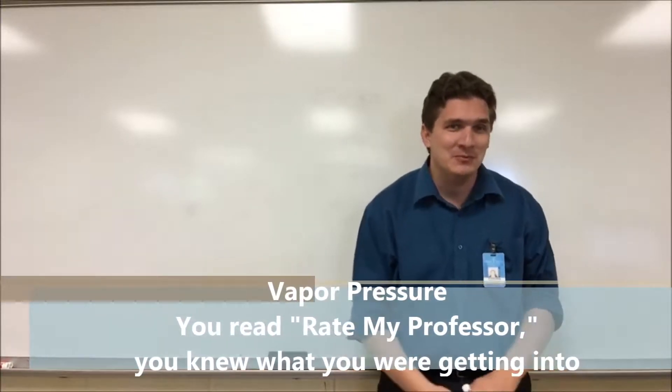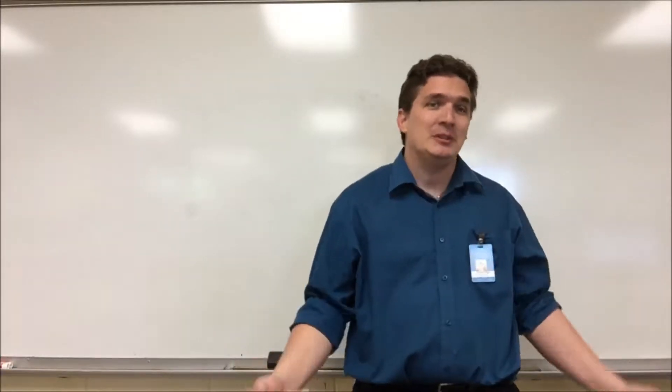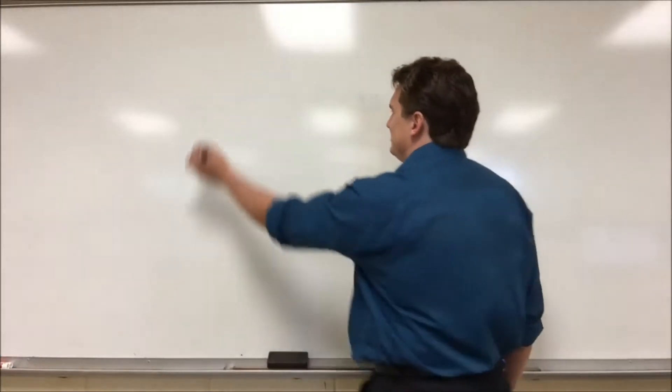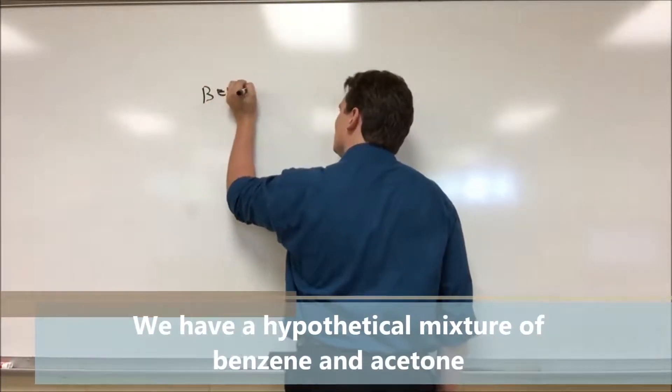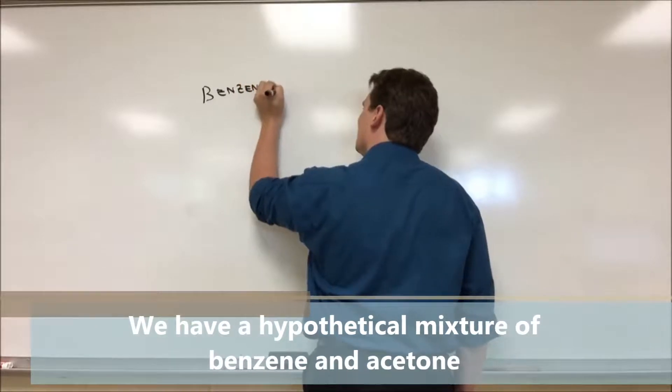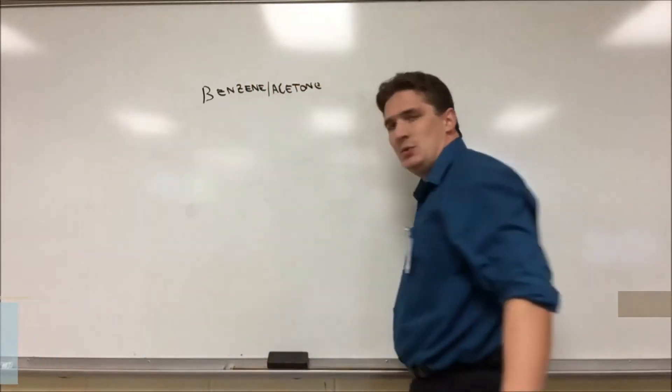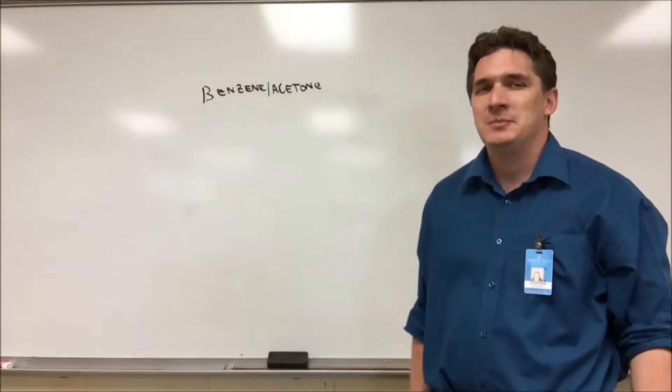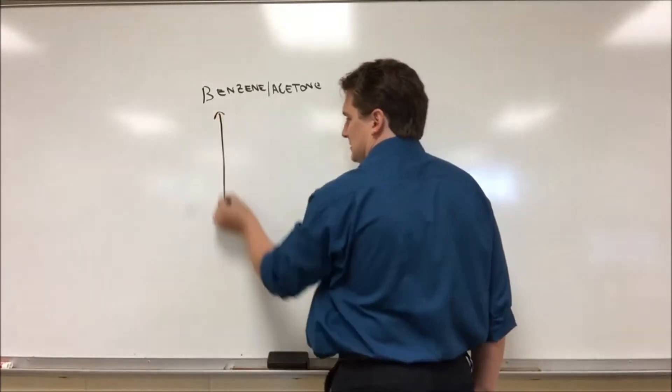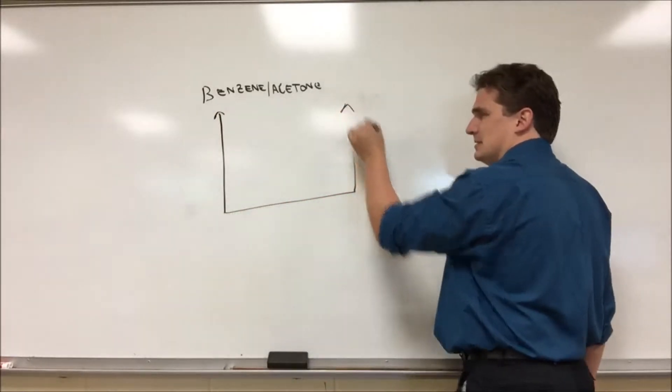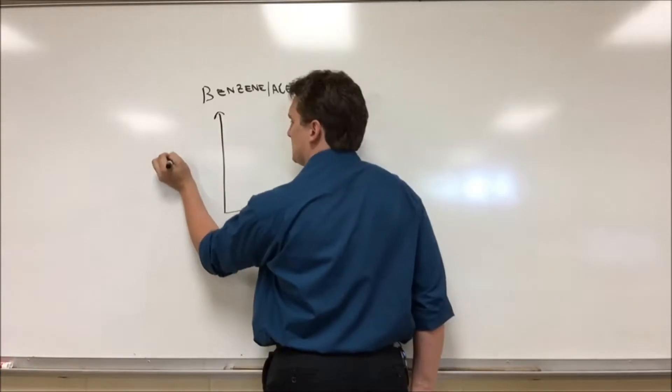So let's say we have two liquids, benzene and acetone, and we want to describe the vapor pressure of a mixture of benzene and acetone. I'm gonna have a graph that looks like this, and on both axes it's just the vapor pressure of solution.